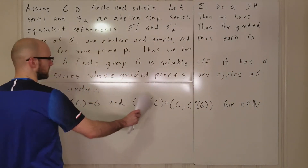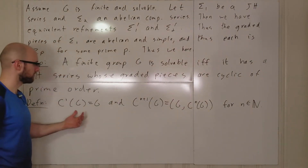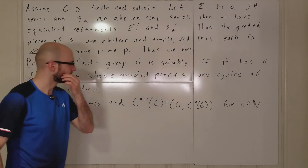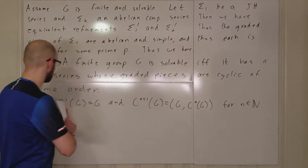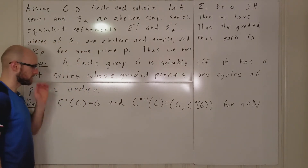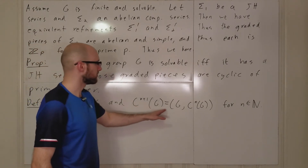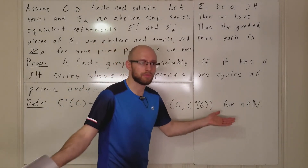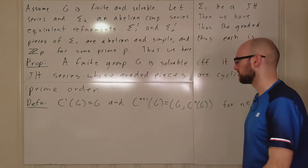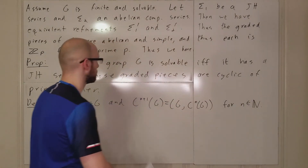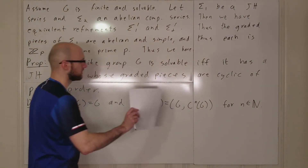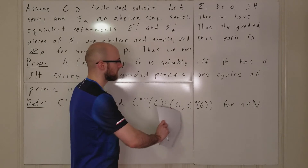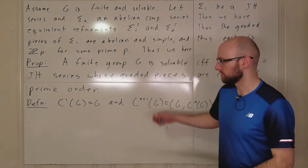So if you want to prove that all the C^n(G) are normal, you can simply induct. Obviously C^1(G) = G. For the C^2 case, C^2(G) = [G, G], the commutator subgroup, which we know is normal. Then by induction, supposing all the way up to C^n these are normal, you look at C^{n+1}: you're taking [G, C^n(G)]. G is normal, C^n is normal, therefore the whole thing is normal. So these are all normal in G.